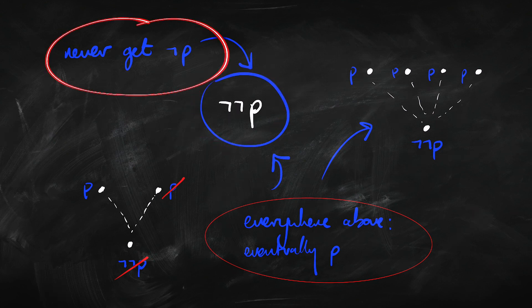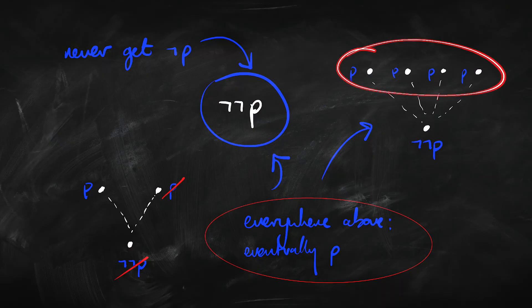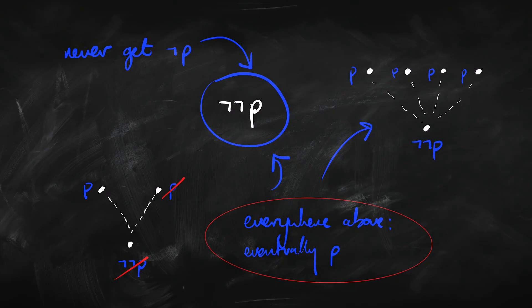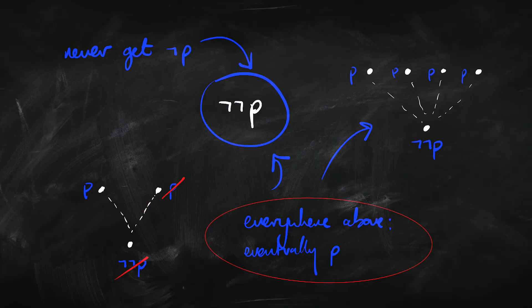Not-not-p means we never get to not-p, and that's going to be the case when everywhere up above you, you can eventually get to p. A different way of saying not-not-p — for understanding it in a model — would be: everywhere you can get to, you get to p eventually. You might not get there straight away or in one step or two steps, but everywhere above, eventually you will get to p. So where would you not get not-not-p? Something like a model where going one way you get p, but going the other way you don't ever get p — you would have not-p there, and that would stop you from having not-not-p.